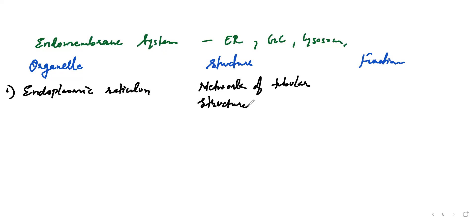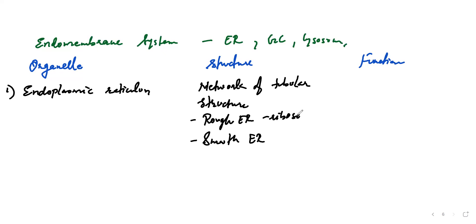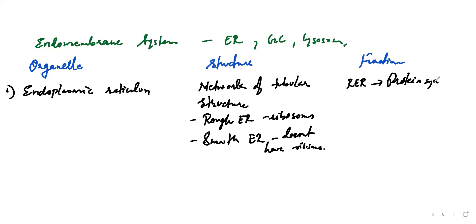There are two types of endoplasmic reticulum: rough ER (RER) and smooth ER (SER). The rough ER has ribosomes on its surface while the smooth ER does not. The RER is mostly involved in protein synthesis and secretion, whereas the SER is involved in the synthesis of lipids.